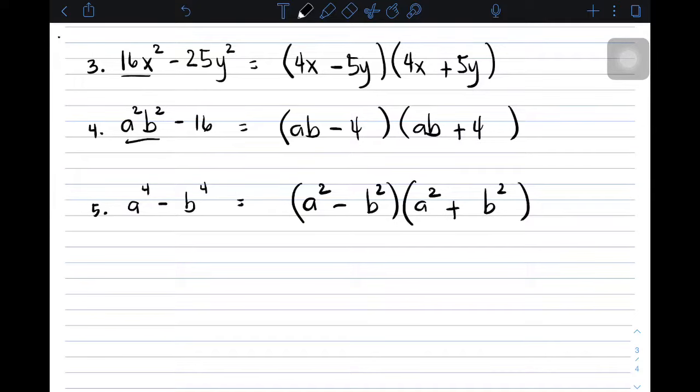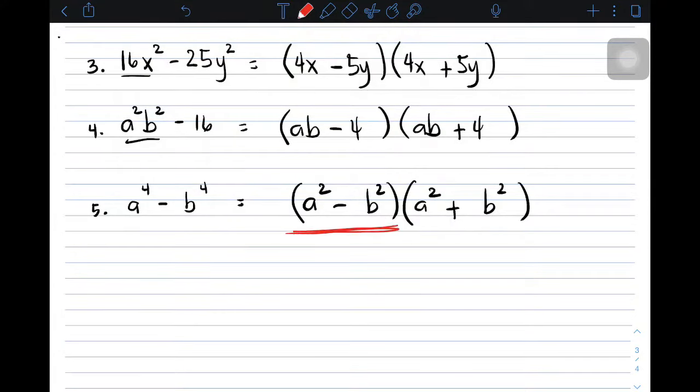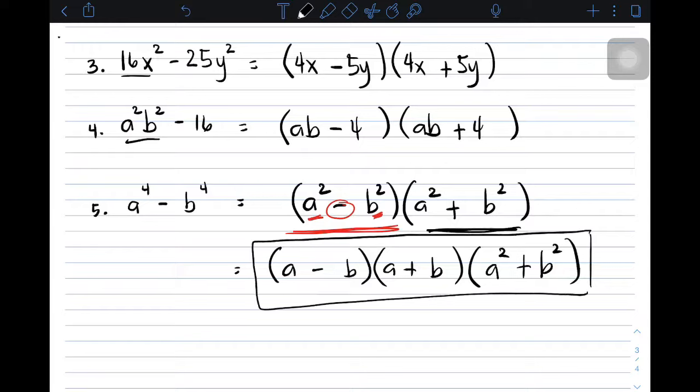But, in this case, as you can see, we still have this term. Kung manunotis nyo, we have two terms, which is a perfect square, first term, second term, and you have the subtraction sign, meaning, you can still factor out that factor. So, to factor out, applying our pattern, the square root of a squared is a. And then, the square root of b squared is b. And then, you have minus, plus, and then copy this factor, times a squared plus b squared. So, to finalize the answer, these are the factors of item number 5.